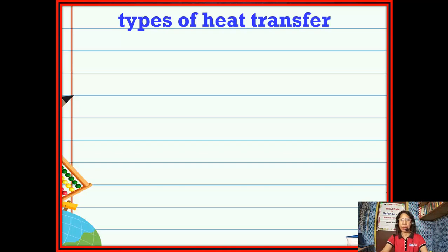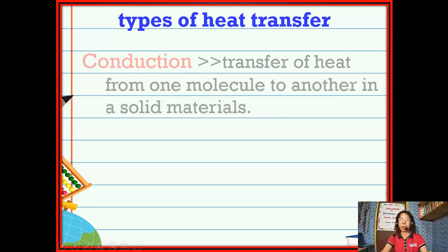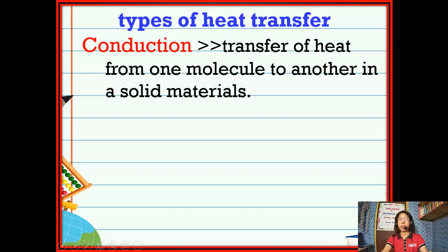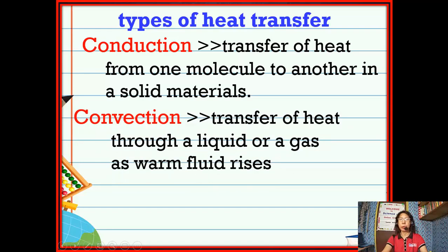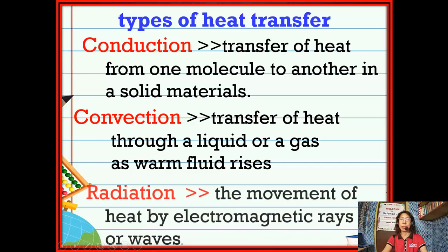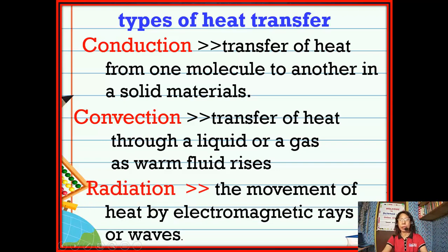There are three types of heat transfer. Conduction is the transfer of heat from one molecule to another in solid materials. The second is convection — the transfer of heat through a liquid or a gas as one fluid rises. And the last one is radiation — the movement of heat by electromagnetic rays or waves. So the three types of heat transfer are conduction, convection, and radiation.